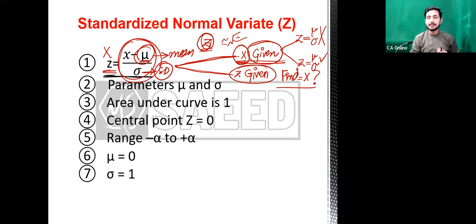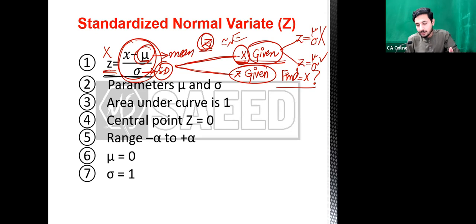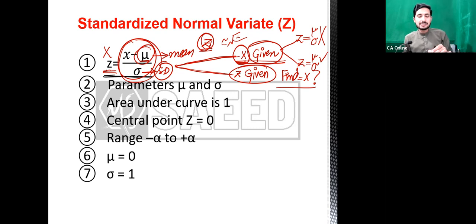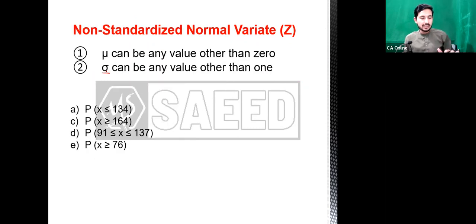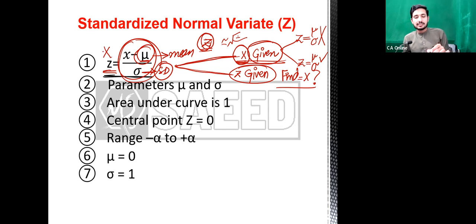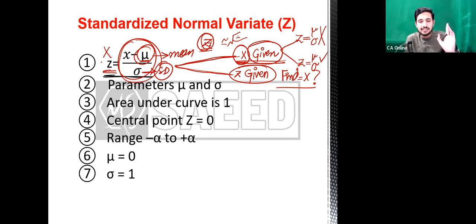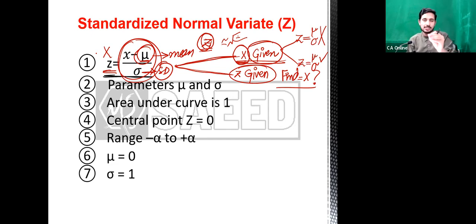Recording شروع کرتے ہیں۔ یہ overview دے چکا تھا، لیکن یہاں سے start کرتے ہیں اور properties دیکھ لیتے ہیں۔ ہمارے پاس z کی value نکالنے کے لیے ایک formula ہے۔ اگر ہمیں z کی value چاہیے - یہ بھی discuss کر لیے کہ table سے کیسے نکالیں گے - z کی value ہمارے لیے بہت ضروری ہے اس question کو complete کرنے کے لیے۔ اگر تو given ہے تو مسئلہ نہیں ہے۔